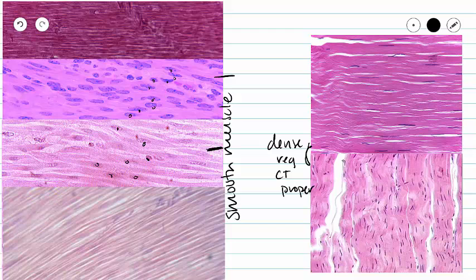However, if you look in our dense regular CT proper, you can see that our nuclei tend to appear in lines. So they line up with each other. You can see that really well in the bottom picture where we have nuclei in lines going all the way down our tissue.